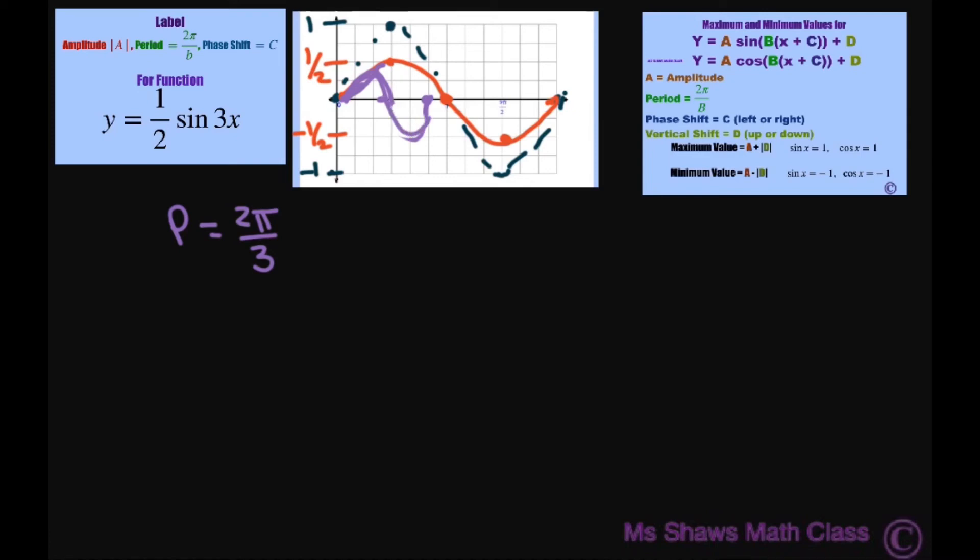Also, you could say, since you have the 3 here, it means it makes 3 waves between 0 and 2 pi. So you can make 3 waves. I can't draw very well, but so there would be 1, 2, 3. So that would be 3 waves that you would have, something like that. All right.